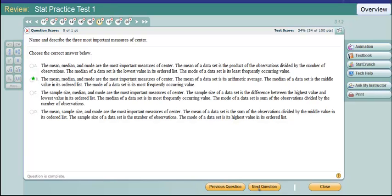Name and describe the three most important measures of center. The mean, median, mode are the three most important measures of center. The mean is the arithmetic average. The median is the middle value in an ordered list, and the mode is the most frequently occurring. So that is the correct answer. Let's see what's wrong with these others. The product of the observation is divided by observations. No, it's the sum, not the product. Mean is not the lowest. It's the middle one in an ordered list. And the mode is not the least frequently. It's the most frequently. So all three of those are wrong.